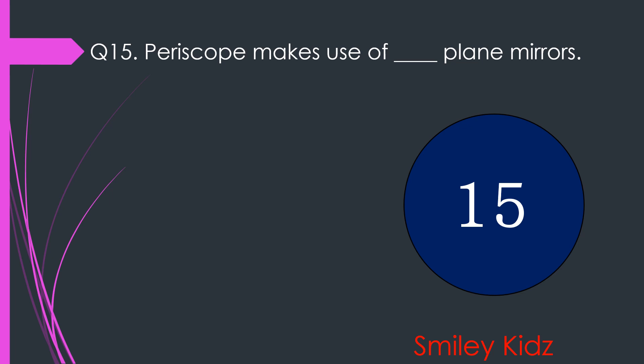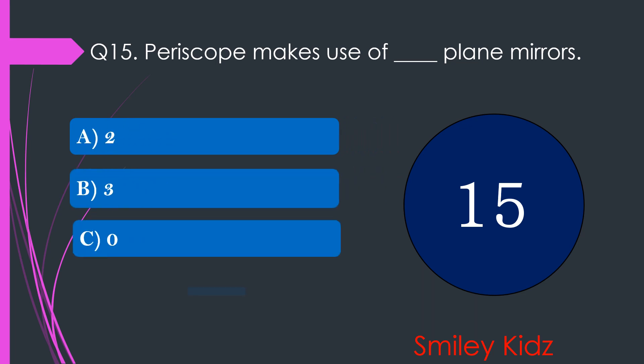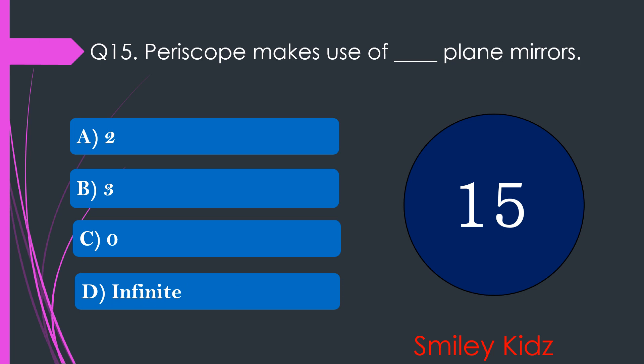Question number 15. Periscope makes use of dash plane mirrors. The options are A. 2, B. 3, C. 0, or D. Infinite. Your time starts now.